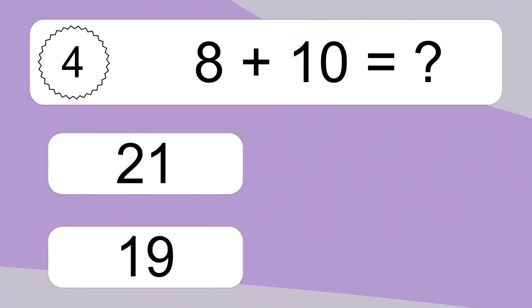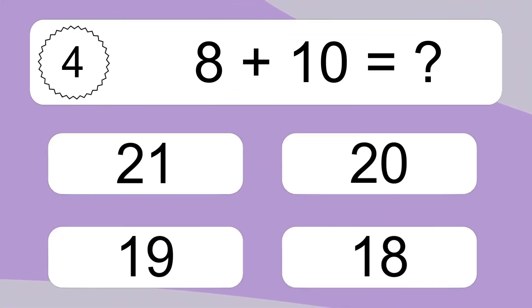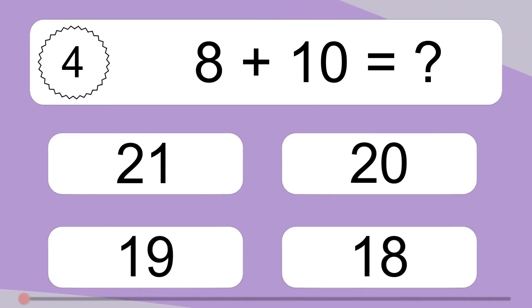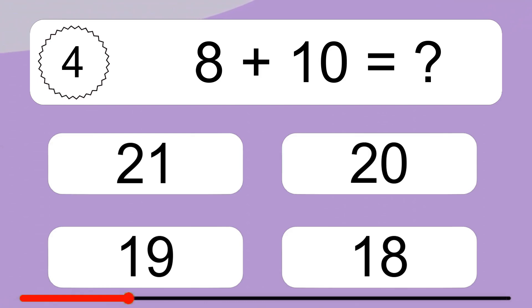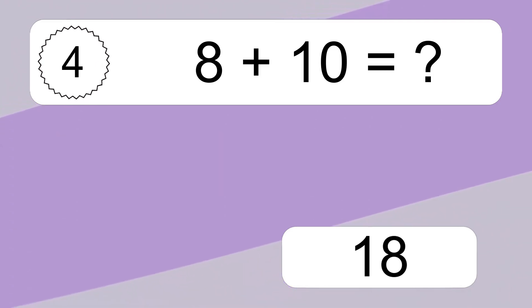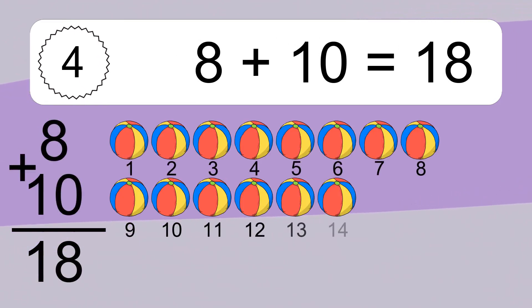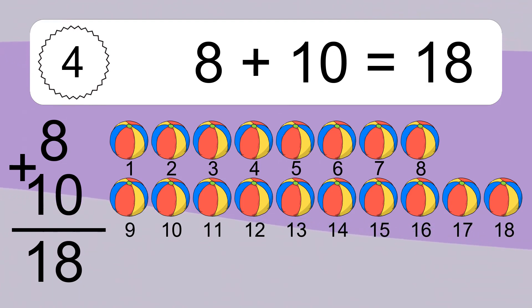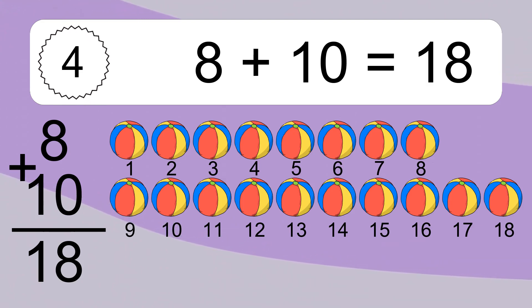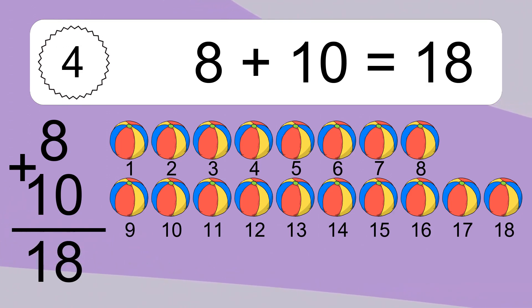8 plus 10 equals what? 8 plus 10 equals 18. Let's count it. 1, 2, 3, 4, 5, 6, 7, 8, 9, 10, 11, 12, 13, 14, 15, 16, 17, 18.